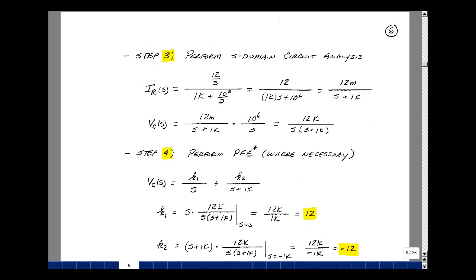Step 3 will be to perform the S domain circuit analysis. So the current flowing in this circuit is going to be the voltage, which is 12 divided by S divided by the total impedance, which was a 1k resistor and a 1 microfarad capacitor, whose impedance is 10 to the 6th over S. Now I need to make this look like our forms in our Laplace transform table, so let's multiply through by S numerator and denominator, so I'll get 12,